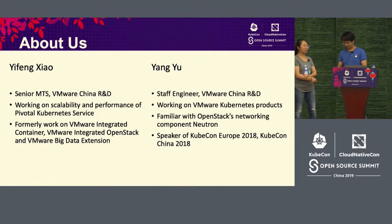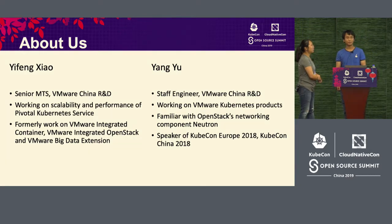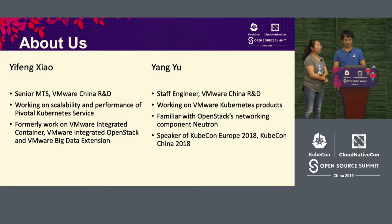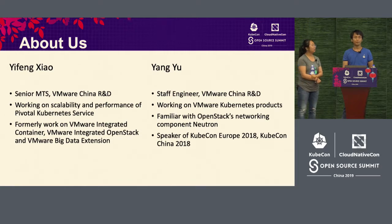Hi, my name is Yu Yang. I also come from VMware China R&D, Beijing office. I work on VMware Kubernetes products and do a lot of development. Before that, I focused on Neutron OpenStack networking.